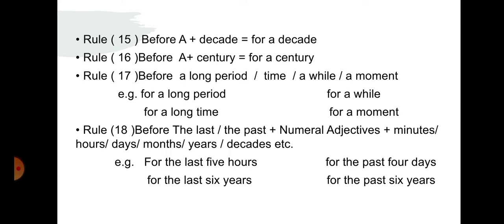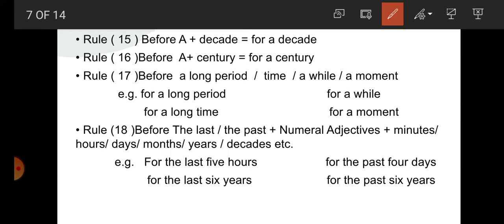Before a decade: for a decade. Before a century: for a century. Before a long time, a long period, a while, a moment — we use for. For example: for a long period, for a while, for a long time, for a moment.